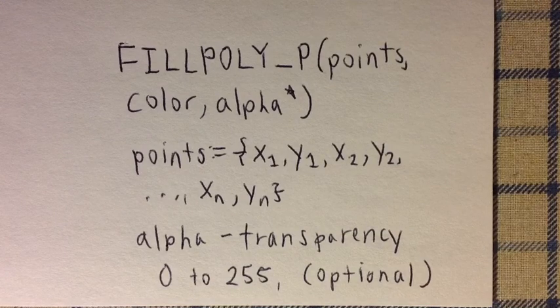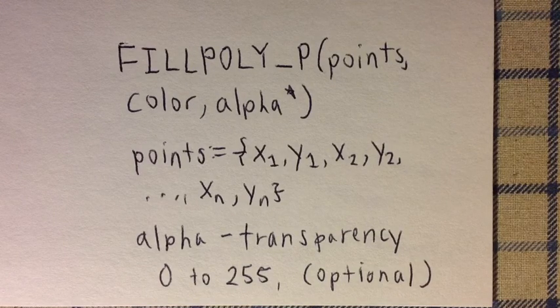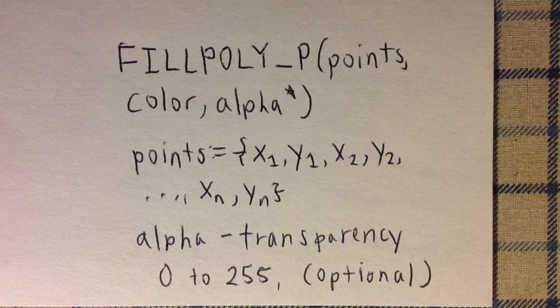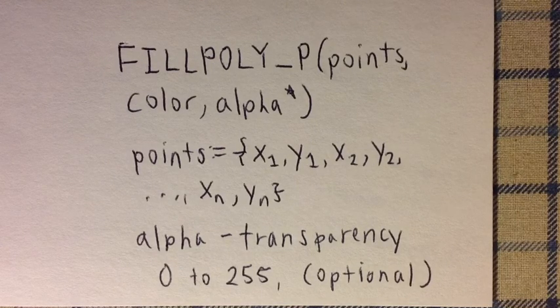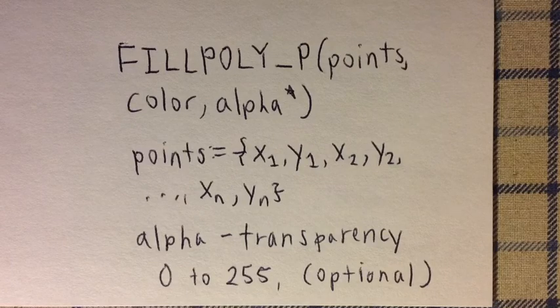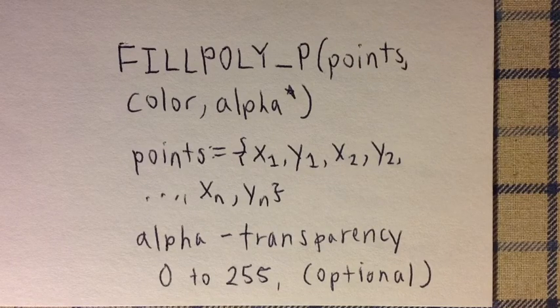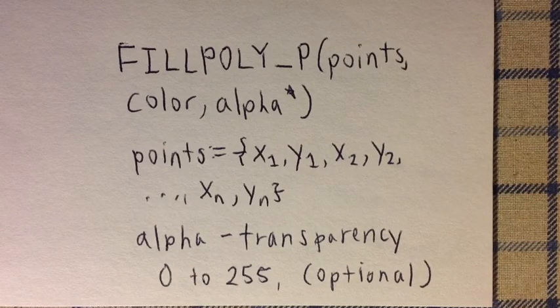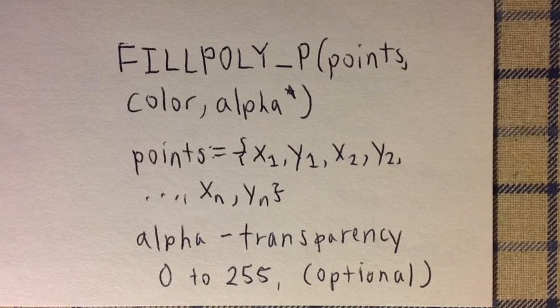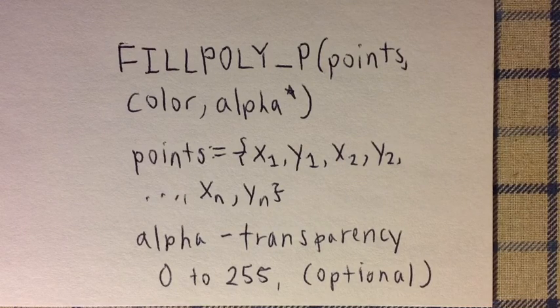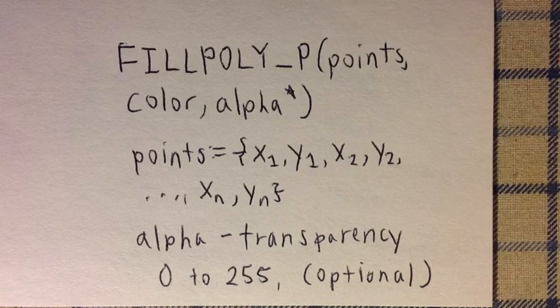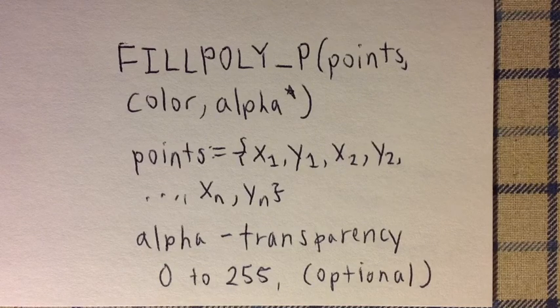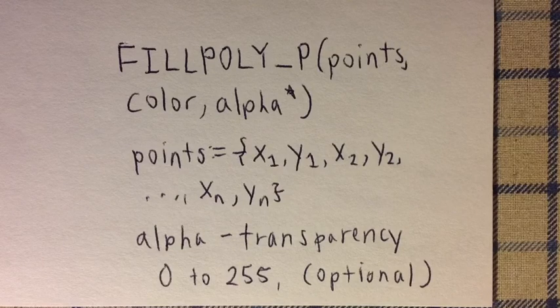This is the syntax for the FILLPOLY command. FILLPOLY has two versions: one FILLPOLY for Cartesian coordinates or FILLPOLY_P for pixel coordinates. I'm going to use the pixel coordinate version. Both versions have three arguments, which the third one is optional: points, color, and alpha.